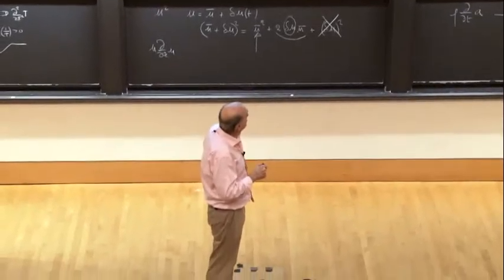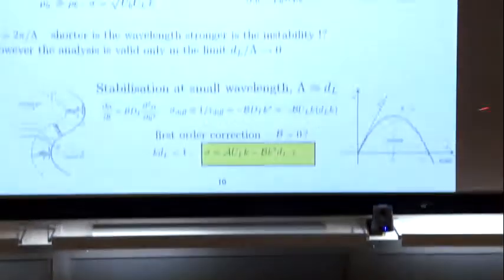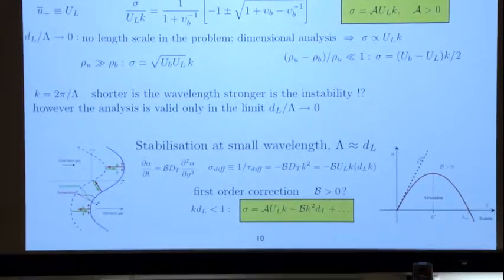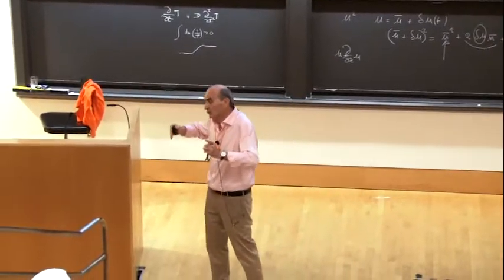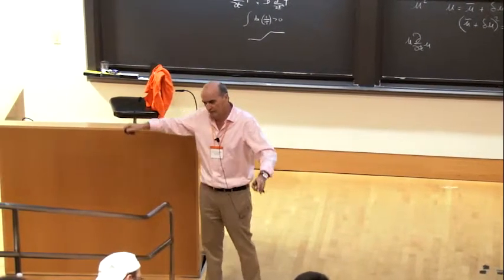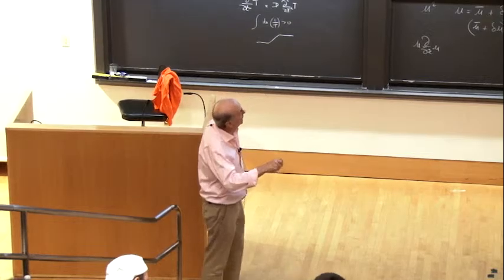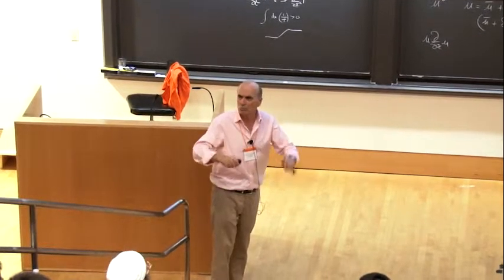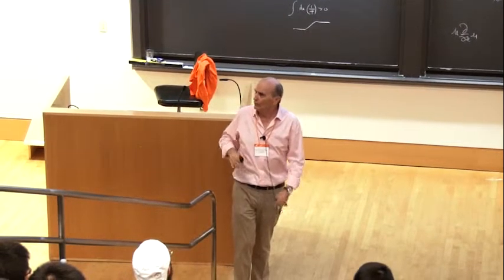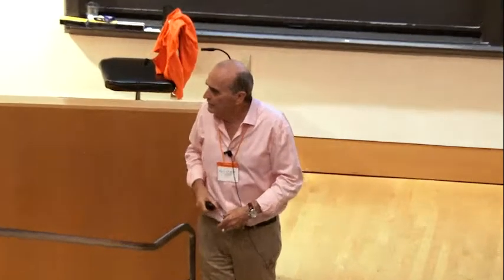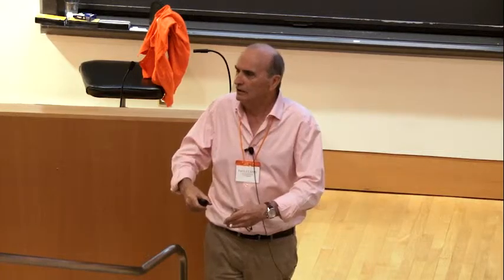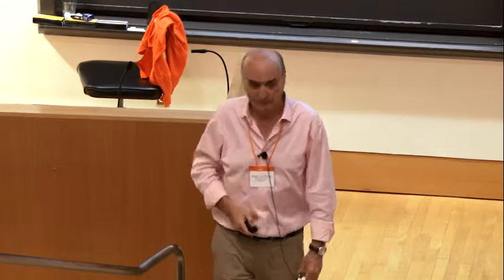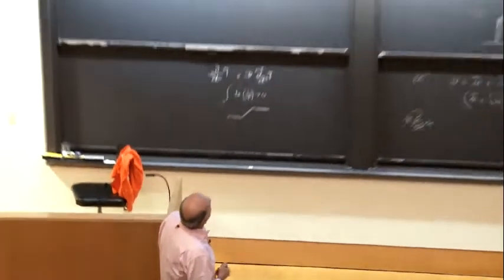You stay unstable in a large wavelength range, but not at short wavelength. At large k, you are stable. This gives you a rough idea of what the situation is when you take into account the finite flame thickness.